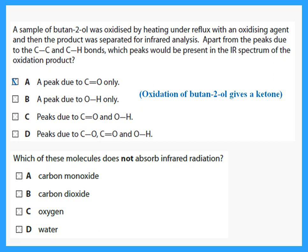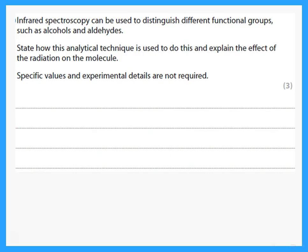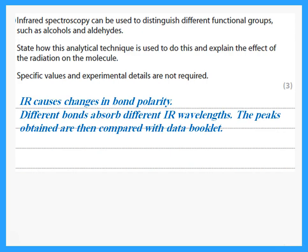Which of these molecules does not absorb infrared radiation? Molecules like oxygen or nitrogen that cannot change their polarity will not absorb IR radiation. What effect does IR radiation have on the covalent bonds in water molecules? The bonds vibrate more. IR spectroscopy can be used to distinguish different functional groups such as alcohols and aldehydes. When a molecule absorbs IR, it causes changes in bond polarity — different bonds absorb different IR wavelengths, and the peaks are compared with the data booklet.